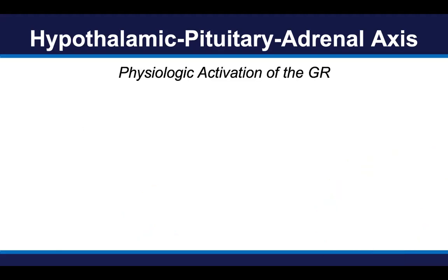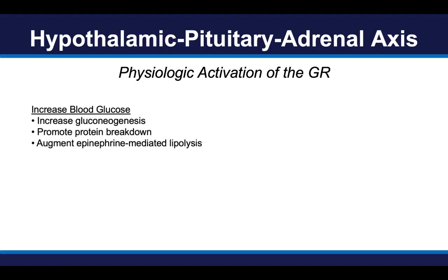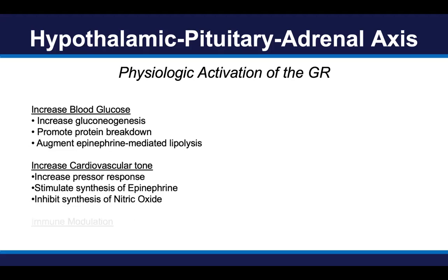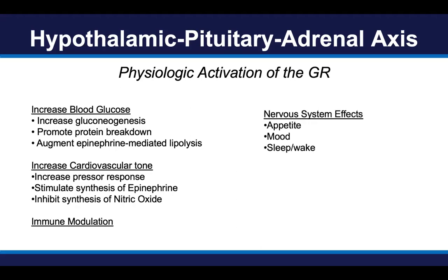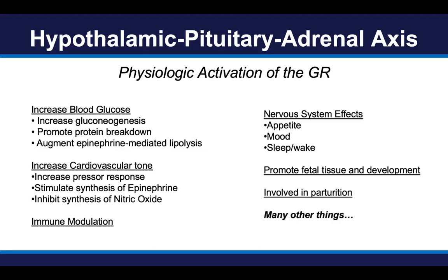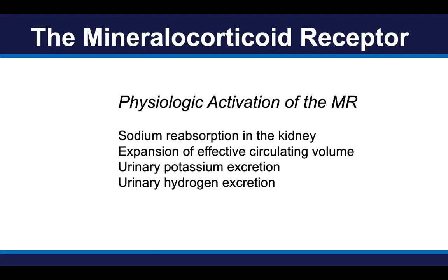Activation of the glucocorticoid receptor by cortisol does many things. It can regulate blood glucose and cardiovascular tone and blood pressure. It is important in the modulation of our immune system. It has multiple nervous system effects such as appetite, mood, and sleep regulation. It's important in the development of fetal tissue, the induction of labor, and many other important bodily functions. Activation of the mineralocorticoid receptor classically has a more narrow role. It's largely expressed in the kidney, and it induces sodium reabsorption in the distal part of the kidney, resulting in an expansion of effective circulating volume, and it also increases the excretion of potassium and hydrogen, or acid, in our urine.